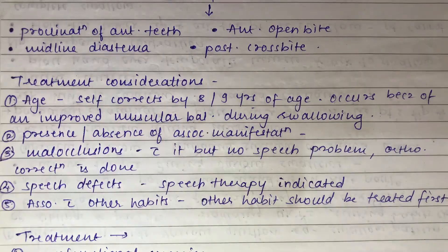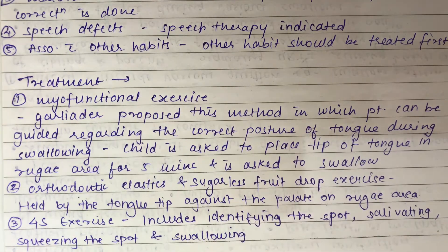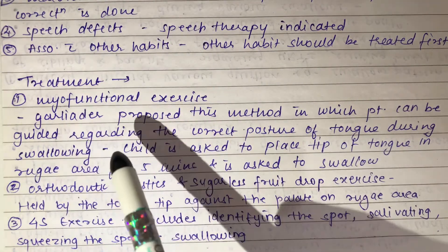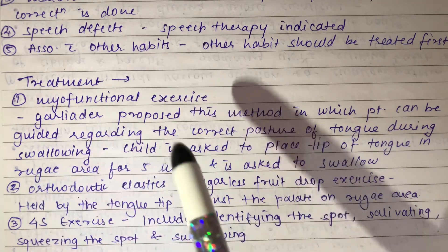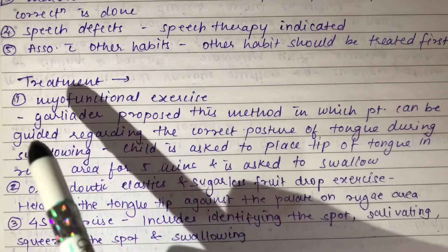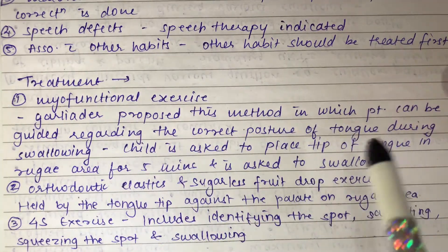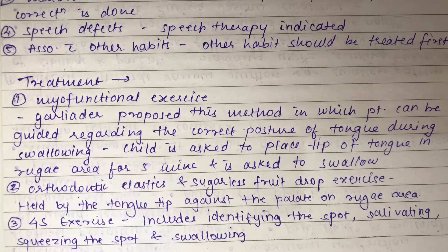The first treatment modality is myofunctional exercise or myofunctional therapy. Garliner proposed a method in which the patient is guided regarding the correct posture of the tongue during swallowing. For example, the child is asked to place the tip of the tongue in the rugae area for five minutes and then swallow.